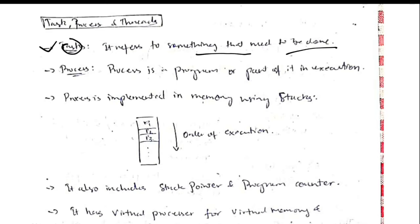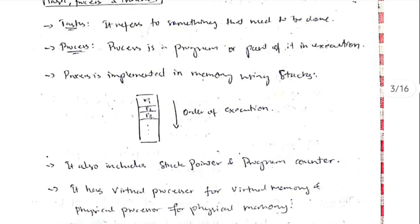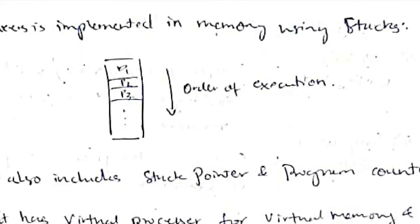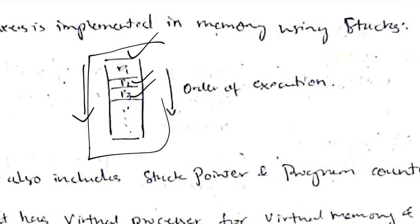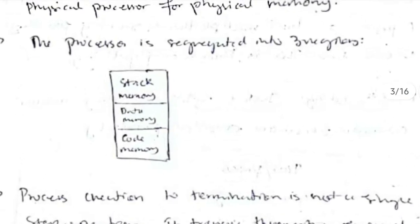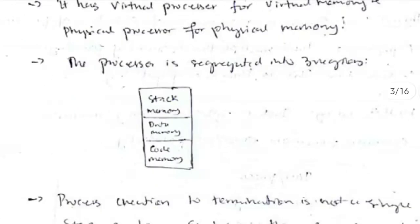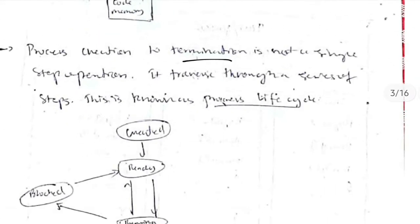A task refers to something that needs to be done — it is a part of a process. A process is a program or part of its execution, and a task is essentially the process itself. Processes are implemented using stacks, stack pointers, and program counters to determine execution order (P1, P2, P3). There are two types: virtual processor for virtual memory and physical processor for physical memory. A process is divided into three parts: stack memory (execution order), data memory (data the process acts on), and code memory (code for execution).